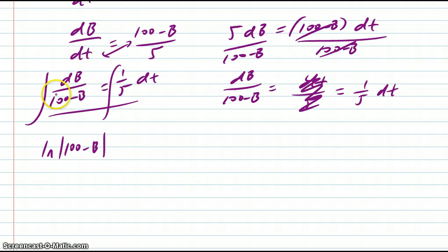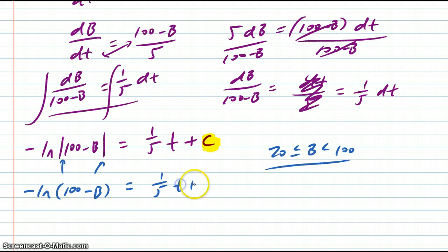Natural log of the absolute 100 minus b. And then I need to have a negative there. I think when you're taking the derivative, you'd multiply by a negative 1, and when you're taking the anti-derivative, you'd divide by a negative 1. But either way, it says negative there. And on the other side, you've got 1 fifth t, and believe it or not, this plus c visits us for I think the first and only time during this entire AP exam for the free response section. And that's crazy. Now, we know we're looking at 20 is less than or equal to b is less than 100, based on some information from earlier.